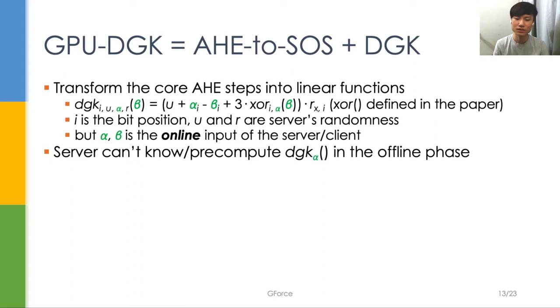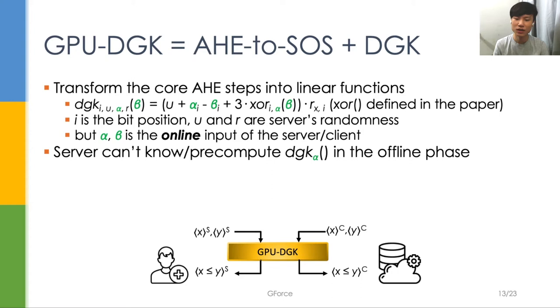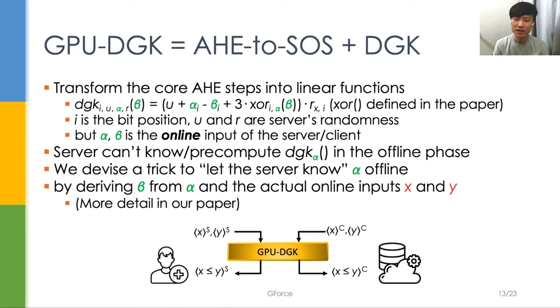To tackle this issue, we shift our problem a little bit to compare two integers x and y, rather than alpha and beta. In our new protocol, the server can know alpha offline, and the client will know beta online, which is derived from alpha and the online input x and y. It involves more algorithmic details, and we encourage you to read our paper to know more.